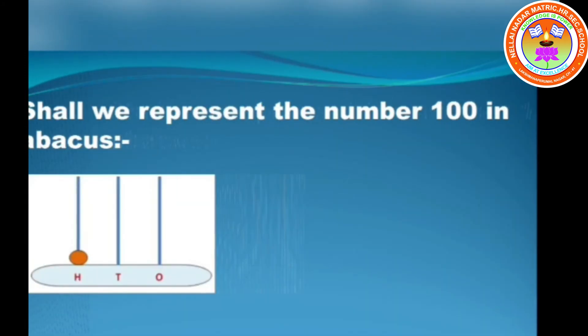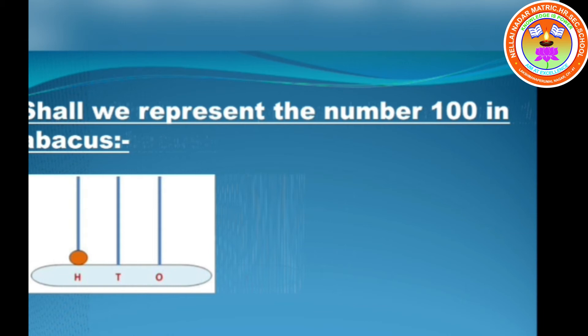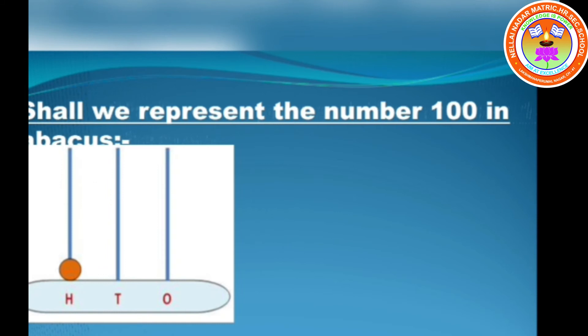Shall we represent the number 100 on an abacus? The number of beads in the ones place shows zero ones. The number of beads in the tens place shows zero tens. One bead in the hundreds place shows 100.